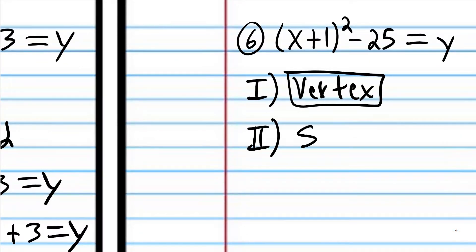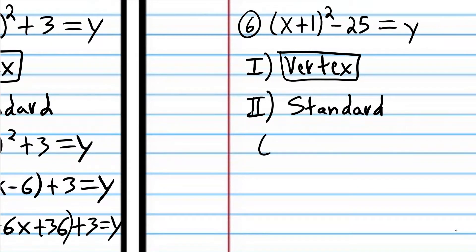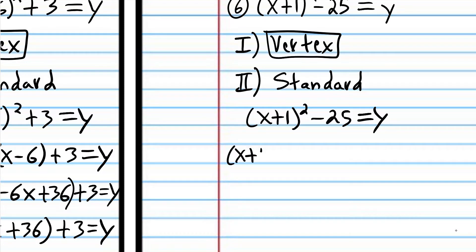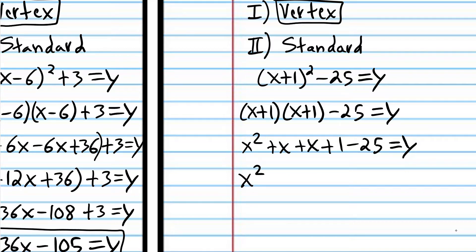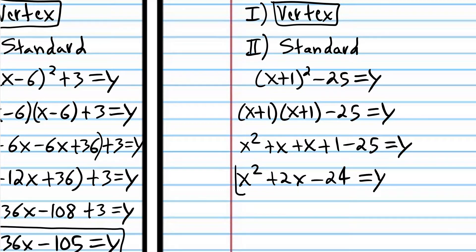Now we're going to convert to the other two forms, starting by converting to standard form. To do that, we'll expand the power expression: x times x is x squared, x times 1 is x, 1 times x is x, 1 times 1 is 1. We can combine the x's to get 2x, and combine 1 and negative 25 to get negative 24. And that is standard form.